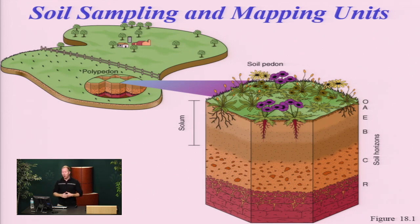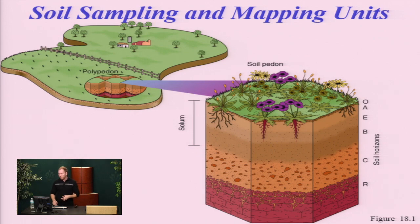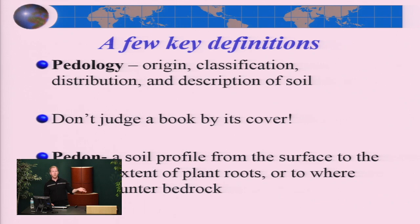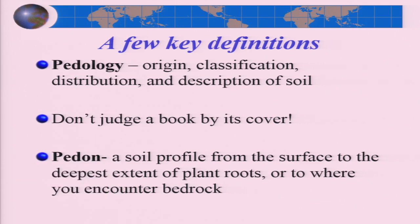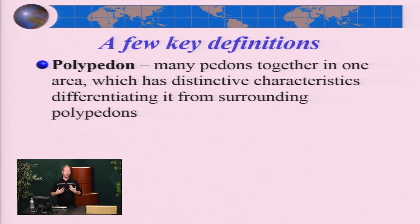A pedan is a vertical slice of the soil from the top all the way down until you reach solid rock. Farmers pull these up because if you're going to plant a crop — corn, soybean, tobacco — those crops will pull out all the minerals and nutrients. Farmers take soil samples to figure out what crop can grow best. A polypedan means taking multiple pedans across an area to compare different soil types and maximize the best nutrients for growing a particular crop.